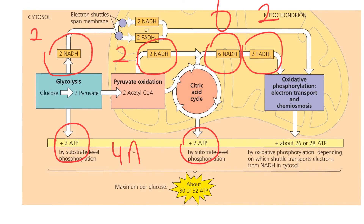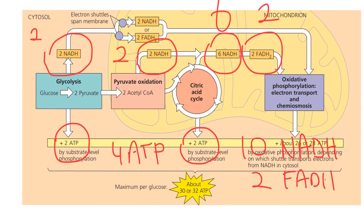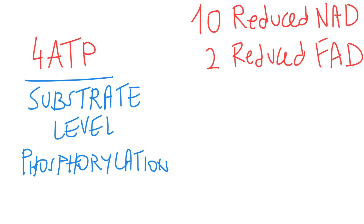In total, we have four ATP molecules already produced by substrate-level phosphorylation, ten reduced NAD (written as NADH), and two reduced FAD (written as FADH2) per one glucose molecule in aerobic cellular respiration.